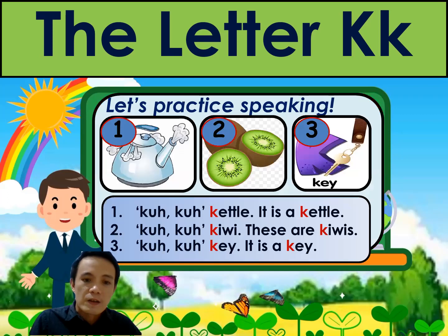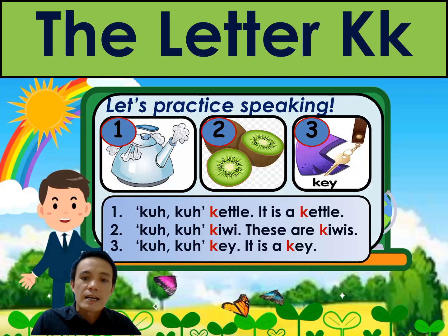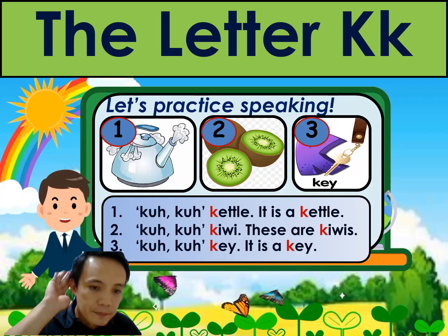Next. Let's practice speaking. Number one — look at the picture for number one. That's K, k, k — kettle. It is a kettle. Repeat after me. Okay, number one: K, k, kettle. It is a kettle.